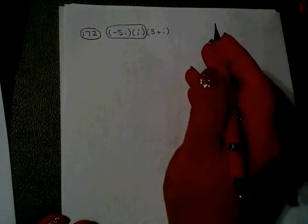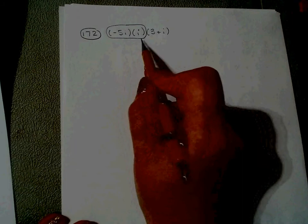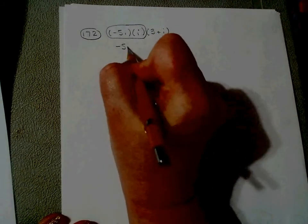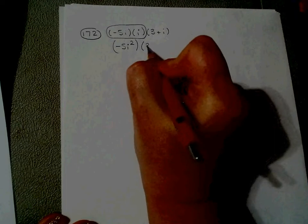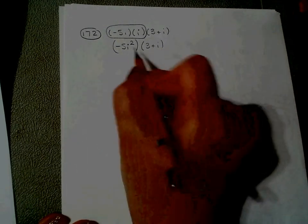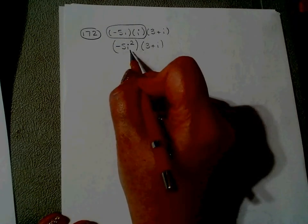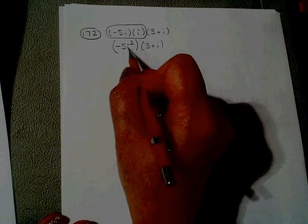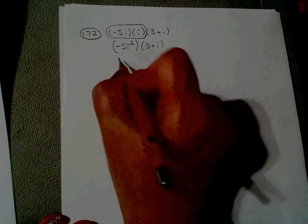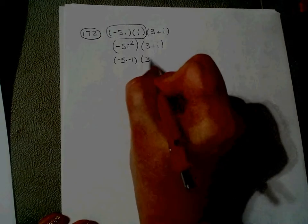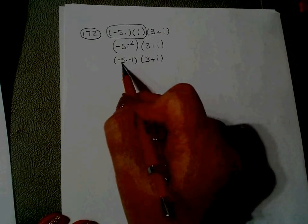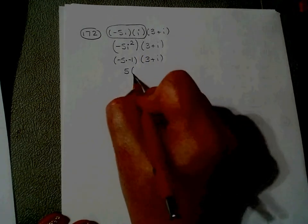So let's do it piece by piece. Negative 5i times i is negative 5i squared. But y'all, I cannot have a power of i bigger than i to the first. So i squared is a fancy name for negative 1. Negative 1 times negative 5 is positive 5.